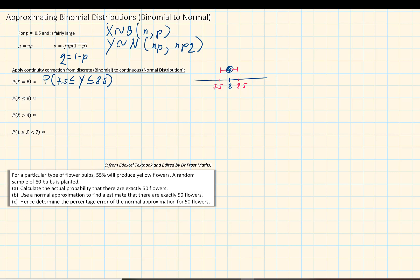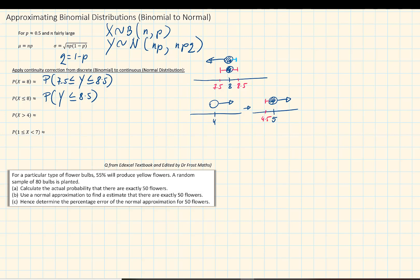For x less than or equal to 8, we include 8 and everything below it, so we take only the upper band, giving probability of y less than or equal to 8.5. For x greater than 4, where 4 is not included, the first included value is 5 and everything above it. Using the continuity correction we need the lower band only, giving probability of y greater than or equal to 4.5.